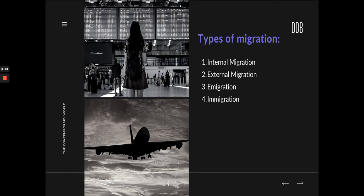External migration means you are moving outside of your country. Immigration and emigration are actually the same — they just differ in perspective. When a Filipino moves to the United States, from the Filipino's origin country perspective, that is called emigration. Immigration is the term used from the perspective of the receiving country. So they refer to the same movement, just depending on the perspective.